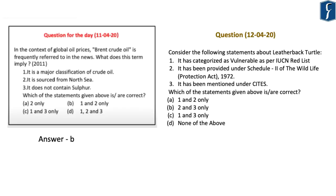The question for the day: Consider the following statements about leatherback turtle — (1) it has been categorized as vulnerable as per the IUCN Red List; (2) it has been provided under Schedule 2 of the Wildlife Protection Act of 1972; (3) it has been mentioned under CITES. Which of the statements given above is/are correct? Options: A) 1 and 2 only, B) 2 and 3 only, C) 1 and 3 only, D) none of the above. Regarding yesterday's answer — the question was about Brent crude oil (asked by UPSC in prelims 2011): it is a major classification of crude oil, it is sourced from the North Sea, and the third statement that it does not contain sulphur was incorrect. The correct answer was B, that is 1 and 2 only.